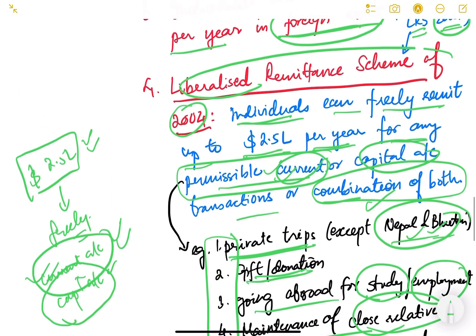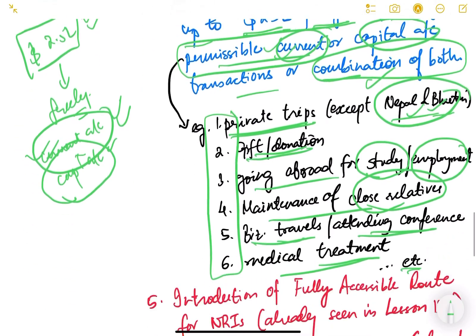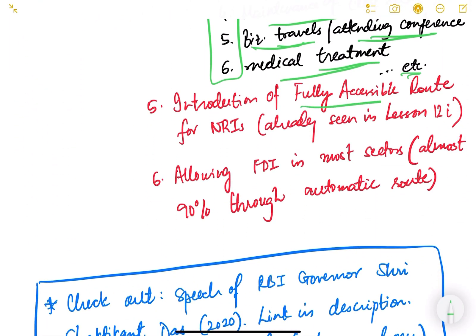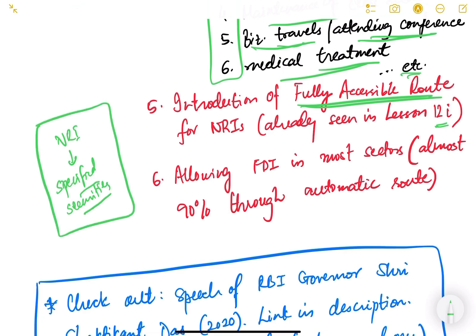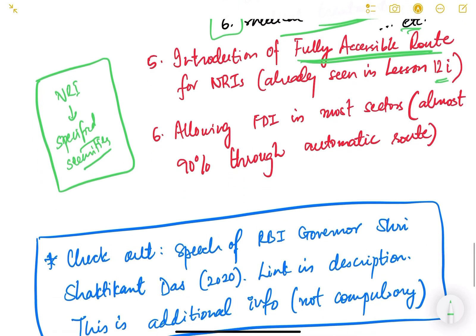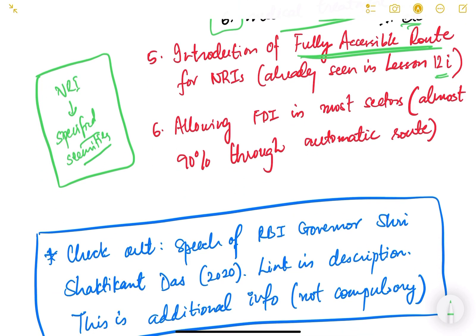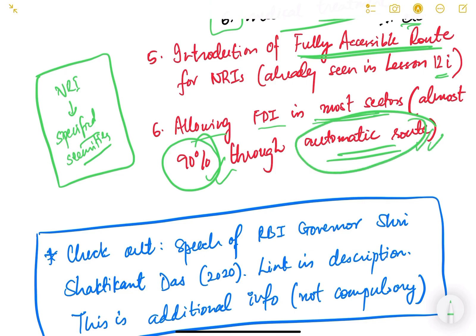Additionally, the Fully Accessible Route, discussed in lesson 12, allows NRIs to invest in specified securities without restriction. FDI policy has also changed over the years — the government now allows FDI in almost 90% of sectors through the automatic route. This is how India is slowly liberalizing its capital account.